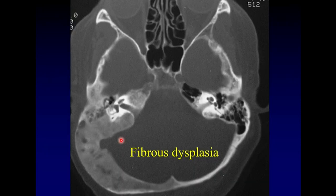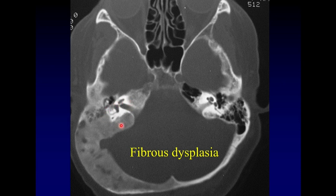Fibrous dysplasia is another lesion that can cause lucency surrounding the otocapsule. In something this extensive, I don't think anyone would be fooled — you've got all these areas of ground glass, classic fibrous dysplasia. Fibrous dysplasia usually spares the otocapsule, and so this is a good clue, but it can also cause mixed hearing loss and will be on our differential diagnosis.